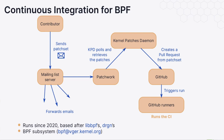When a contributor sends a patch by email to the mailing list, the server receives the patch, distributes it to all the subscribed people, and also sends a message to Patchwork — the web interface where you can manage patches, set the status, and check the CI status. There is also the kernel-patches daemon, which currently runs on Meta's infrastructure, and regularly polls Patchwork for new patches. When it gets a new patch set, it turns it into a pull request on GitHub, which triggers a run of the CI.